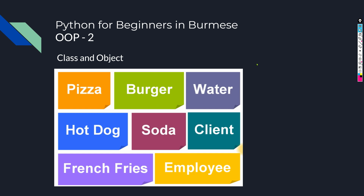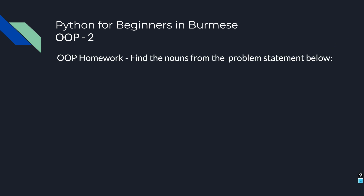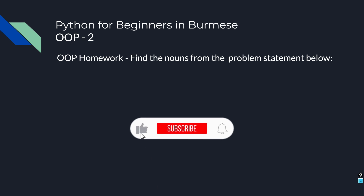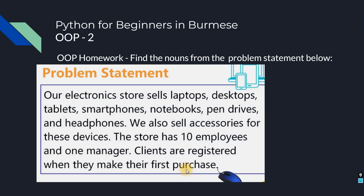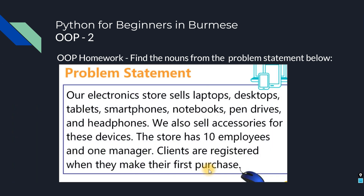We have a fast food restaurant example. Now let's look at the problem requirements and problem statement with a new example. We identify the nouns, which become our current class design. The electronic store is called the electronic store.